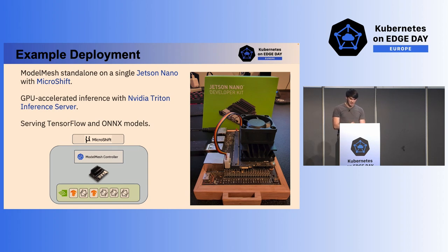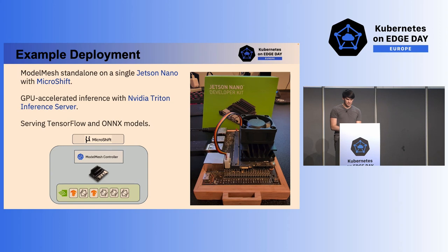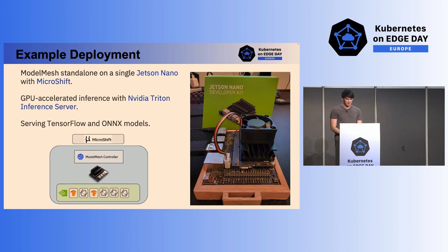I unfortunately cannot bring my Jetson Nano to this event, but that's a picture of it on the right. On my Jetson Nano, which has a quad-core ARM64-based processor and four gigabytes of RAM, I deployed MicroShift — a small form-factor OpenShift currently being developed by the Red Hat Emerging Technologies Group. OpenShift is Red Hat's enterprise Kubernetes platform. MicroShift works remarkably well on the Jetson Nano — it runs as a single binary, uses less than one gigabyte of RAM and generally less than a single CPU core, giving me an all-in-one minimal Kubernetes installation.